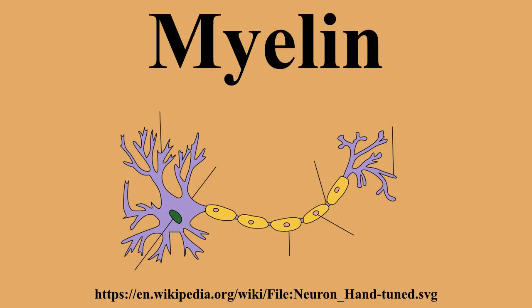Sufferers of pernicious anemia can also suffer nerve damage if the condition is not diagnosed quickly. Subacute combined degeneration of the spinal cord secondary to pernicious anemia can lead to slight peripheral nerve damage to severe damage to the central nervous system, affecting speech, balance, and cognitive awareness.